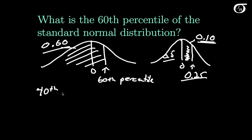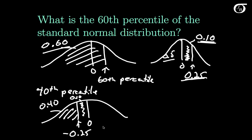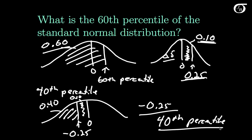What about the 40th percentile? The 40th percentile is the value that gives 40% of the area to the left, meaning 10% of the area between 0 and that value. We just figured out that 0.25 has an area of 0.1 between it and 0. So by the symmetry argument, the 40th percentile must be minus 0.25. Since our table only gives positive values of Z, we frequently use that symmetry argument — looking at values on the positive side and then tacking on a negative sign when necessary.